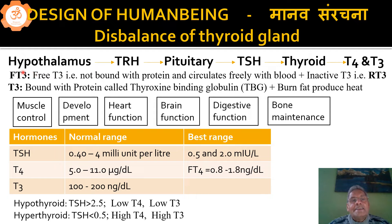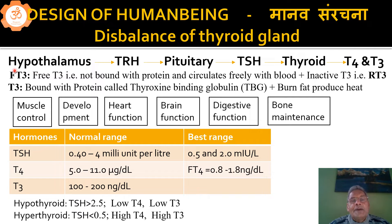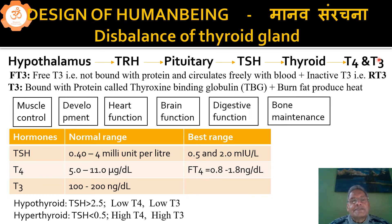We know that our hypothalamus, which controls our body organs, is responsible for the proper control of thyroid glands also. How is the hypothalamus controlling the thyroid gland? Hypothalamus creates TRH hormone that controls the pituitary, and pituitary releases TSH — thyroid stimulating hormone — that regulates the thyroid gland. The thyroid gland then releases T4 and T3. All these things we have discussed already.